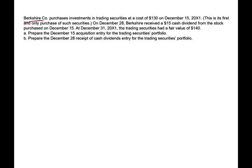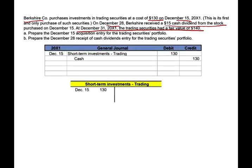This company purchased investments in trading securities at a cost of $130 on December 15th — this is the first and only purchase of such securities. On December 28th, they received $15 in cash dividends. The stock at year-end was trading at $140. We need to record three things: the purchase, the dividend, and the fair value adjustment. First, record the purchase: debit short-term investments $130, credit cash $130. Second, the $15 dividend: debit cash, credit dividend revenue.